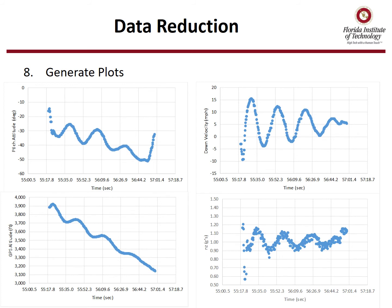Step eight is to generate those plots. You can see here's the four plots of pitch attitude, GPS altitude, down velocity, and NZ. As you can see, all of these produce a sinusoid where you could pull off a period and some amplitudes to calculate the damping ratios and natural frequency.